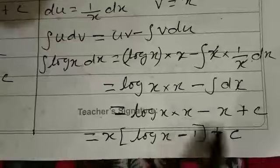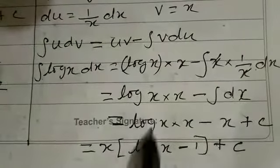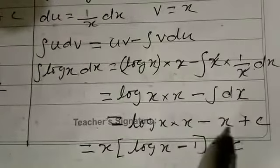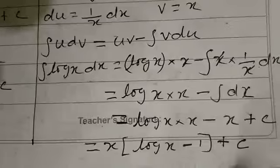Here x and x is common. So we can take that x outside. So here log x minus, when you are taking x outside means only one is there. So minus 1 plus c. That's all.